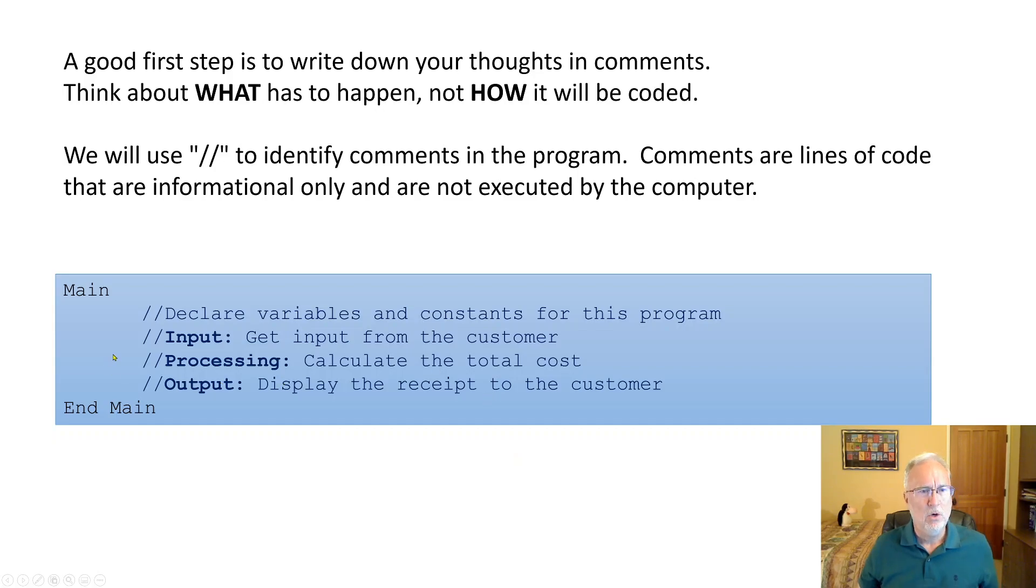Here's what has to happen. We have input, processing, and output right here. Input: get input from the customer. Processing: calculate the total cost. Output: display the receipt to the customer. So this is high level.